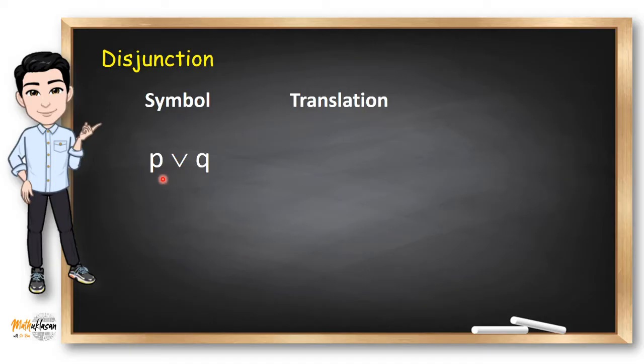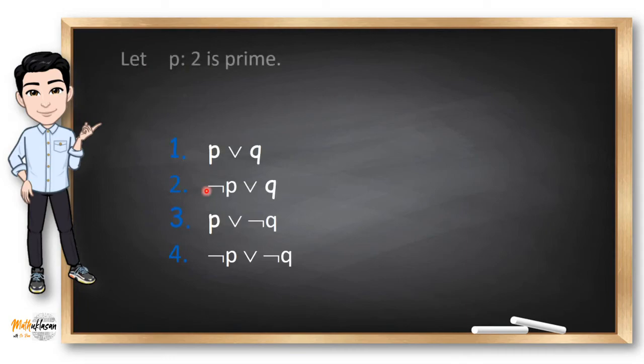Disjunction in symbol is like P, V, Q but we read it as P or Q or P unless Q. For example, let P be the proposition 2 is prime and Q be the proposition 2 is even. Now, in number one, we read it as P or Q. But if we're going to translate it in English using this given, then 2 is a prime or even. In number two, this is not P or Q. In English, 2 is not a prime or 2 is even. Number three is almost the same as number two. So how about we jump in number four. This is a not P or not Q. If we're going to translate it in English, it could be 2 is not a prime nor even.